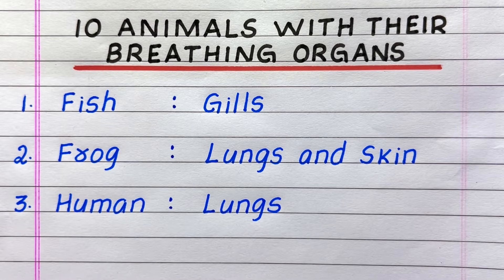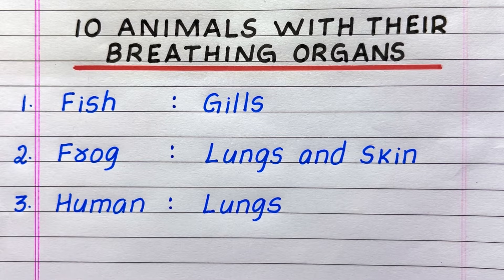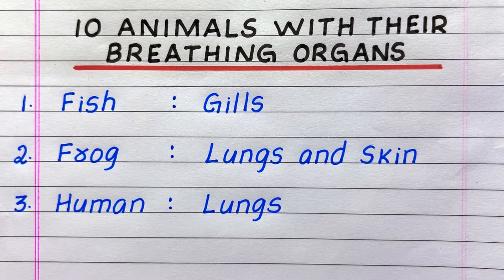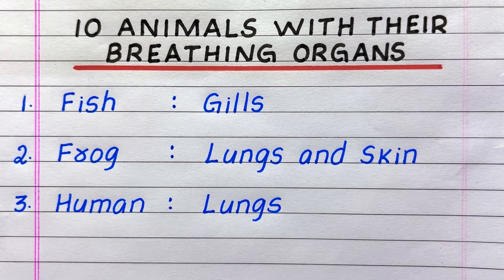First one, the breathing organ of fish is gills. Second, frog — lungs and skin. Third, human — lungs.